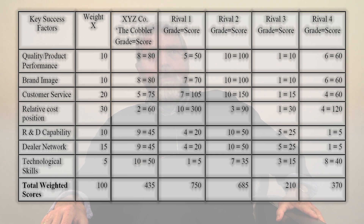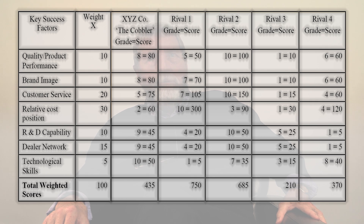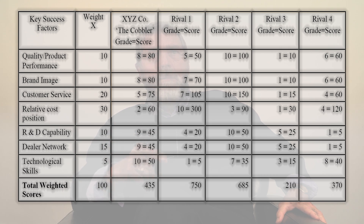In step 5, we compute the weighted scores. This is done by mathematically multiplying the weight in the second column by the grade allocated for each specific firm. For firm XYZ, multiply the weight for quality product performance — that's 10 — by the grade awarded, a high 8, and the result is 80, a very high rating. In this case study, the Black Watch Regiment liked the firm's Buckle Brogues. Record this resulting value on the chart, then continue multiplying weights and grades for each attribute for Rivals 1, 2, 3, and 4.